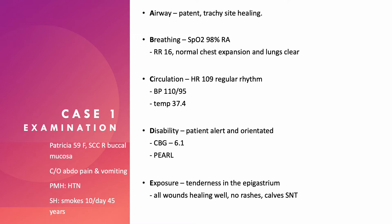We examine the patient using an A-to-E approach. The airway is patent and the tracheostomy site appears to be healing. Breathing: oxygen saturation 98% on room air, respiratory rate 16, normal chest expansion, lungs clear on auscultation. Circulation: patient is tachycardic at 109 with a regular rhythm, blood pressure 110 over 95 — that's dropped a little. Temperature is 37.4. Disability: patient is alert and orientated, blood glucose 6.1, pupils equal and reactive to light. Exposure: tender in the epigastrium, wounds healing well, no rashes.